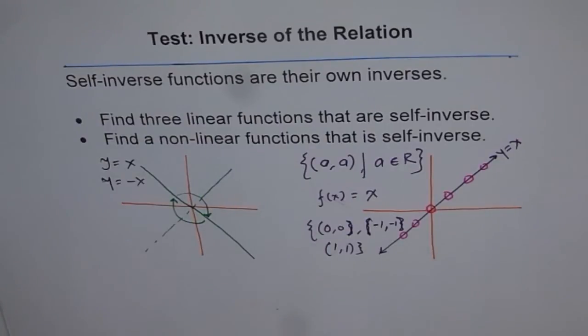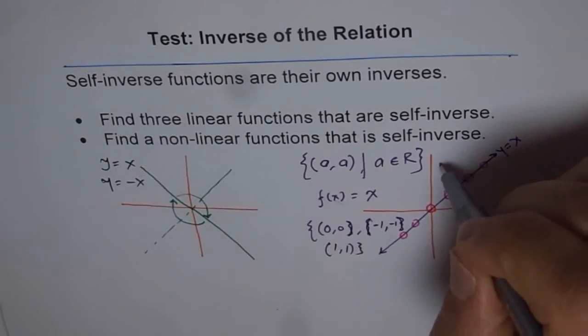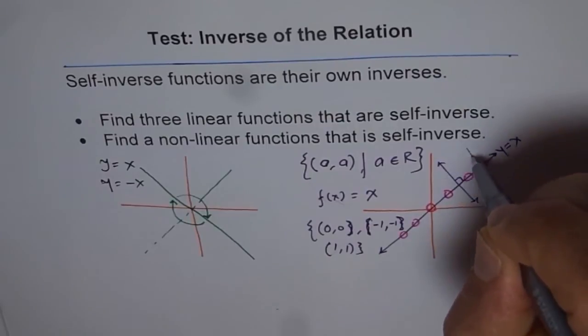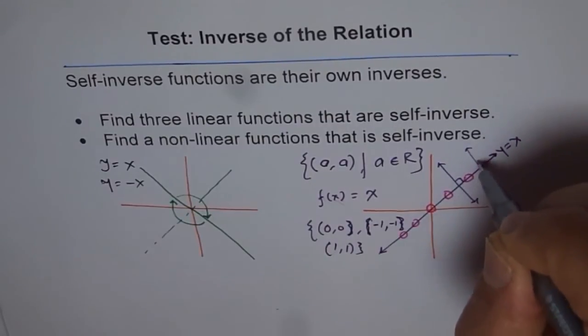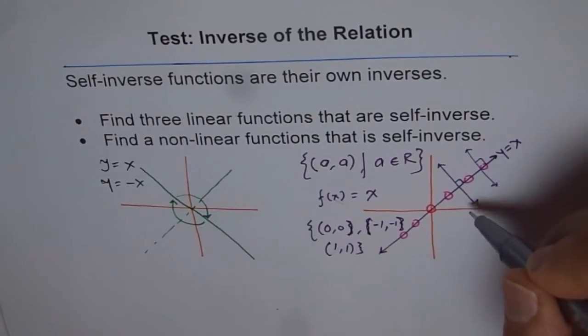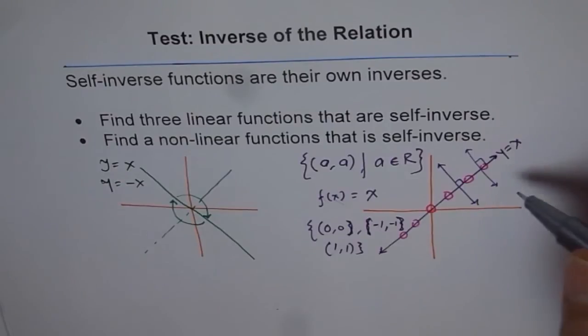So, that gives me two examples. How about the third one? There could be many, many lines. And, that gives you an idea. Any line which is actually perpendicular to this line. Do you understand? Any line which is perpendicular to this line can be reflected onto itself. So, that gives you infinite number of solutions for this question. Do you agree with me?